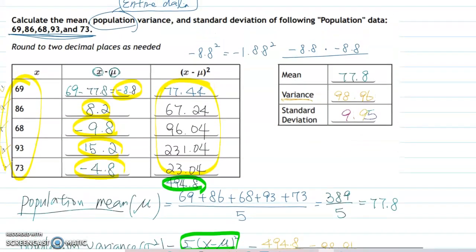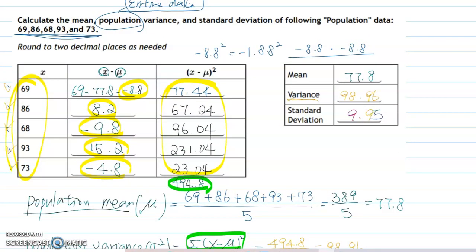So we found everything here. Population mean, population variance, and population standard deviation. If you watch the sample dataset video, then you can see very many similarities and also differences, but the steps are mostly the same.